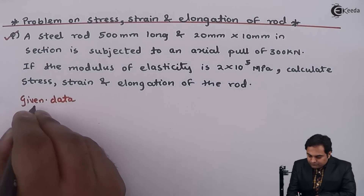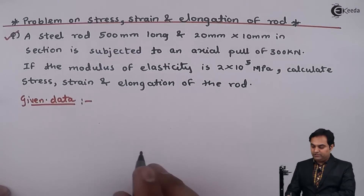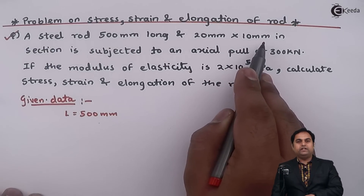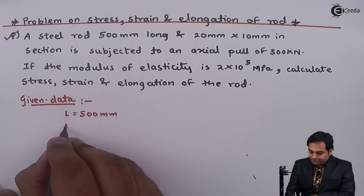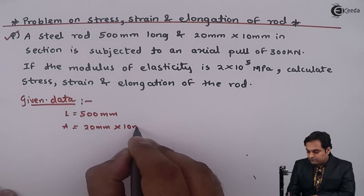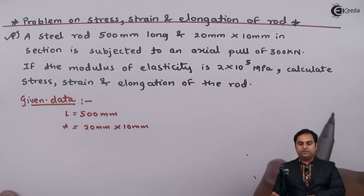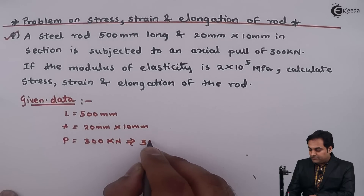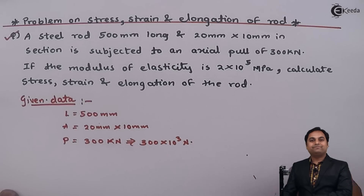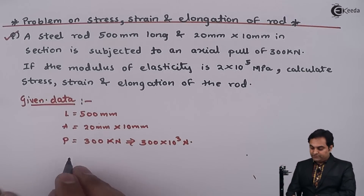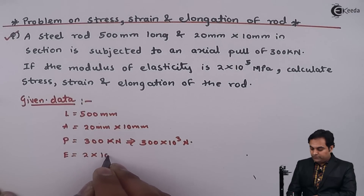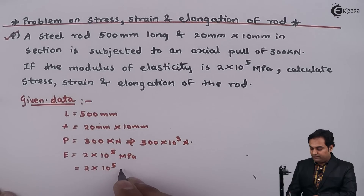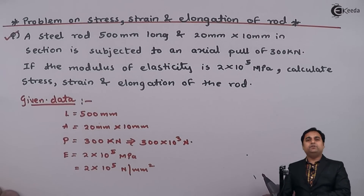The length of the rod L is 500 mm. The cross-section area A is 20 mm × 10 mm. It is subjected to an axial pull P equal to 300 kilo Newton, that is 300×10³ Newton. The modulus of elasticity E is 2×10⁵ megapascal, which we convert to 2×10⁵ Newton per mm², since 1 megapascal equals 1 Newton per mm².